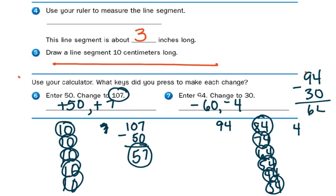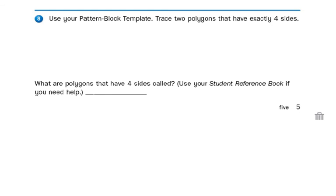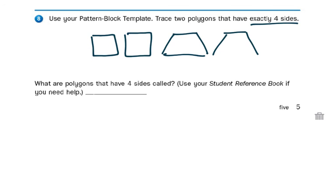One last problem. Number 8. Use your pattern block template. Trace two polygons that have exactly four sides. Your template is that blue see-through. You could do two squares, two trapezoids. Go ahead and trace two polygons that have exactly four sides. What are the polygons that have four sides called? They're called quadrilaterals.